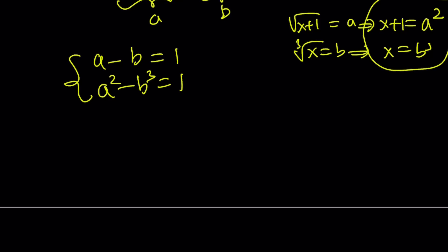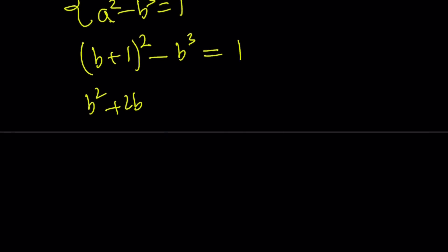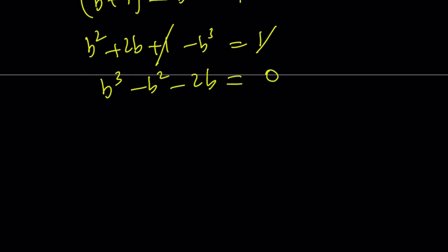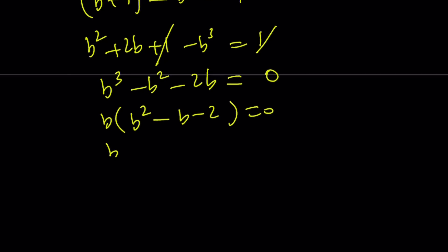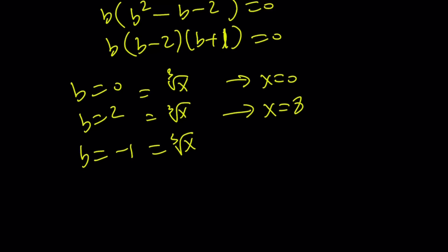I replace a with b plus 1 in the second equation, giving b plus 1 squared minus b cubed equals 1. Expanding: b squared plus 2b plus 1 minus b cubed equals 1. The 1 cancels. Putting everything on the same side: b cubed minus b squared minus 2b equals 0. Taking out a b: b times b squared minus b minus 2 equals 0, which factors as b times b minus 2 times b plus 1 equals 0. So b equals 0, b equals 2, or b equals negative 1. Since b is cube root of x, we get x equals 0, x equals 8, and x equals negative 1.